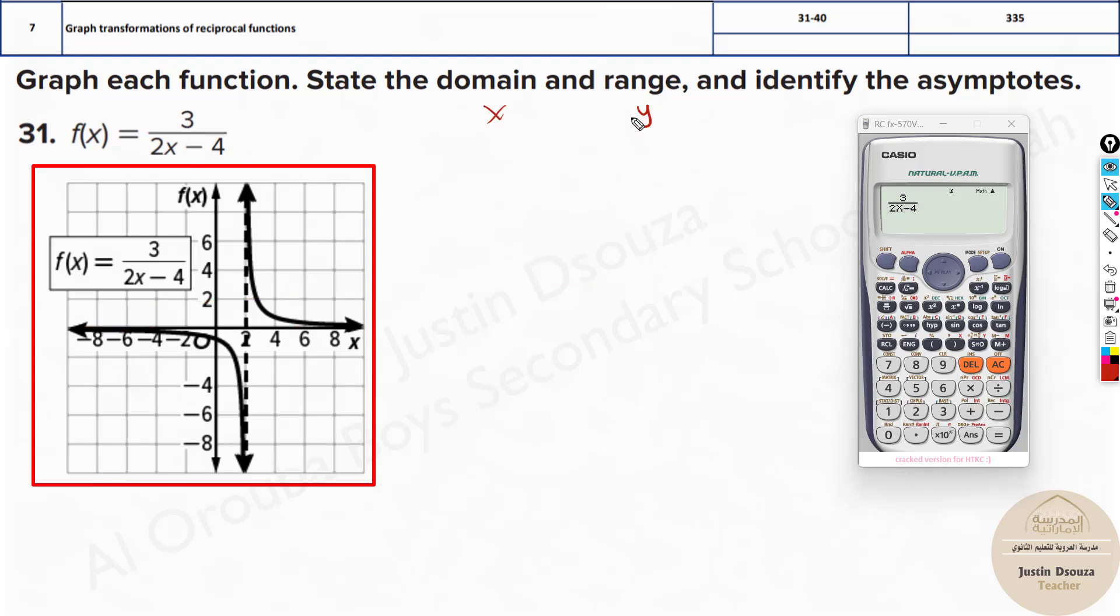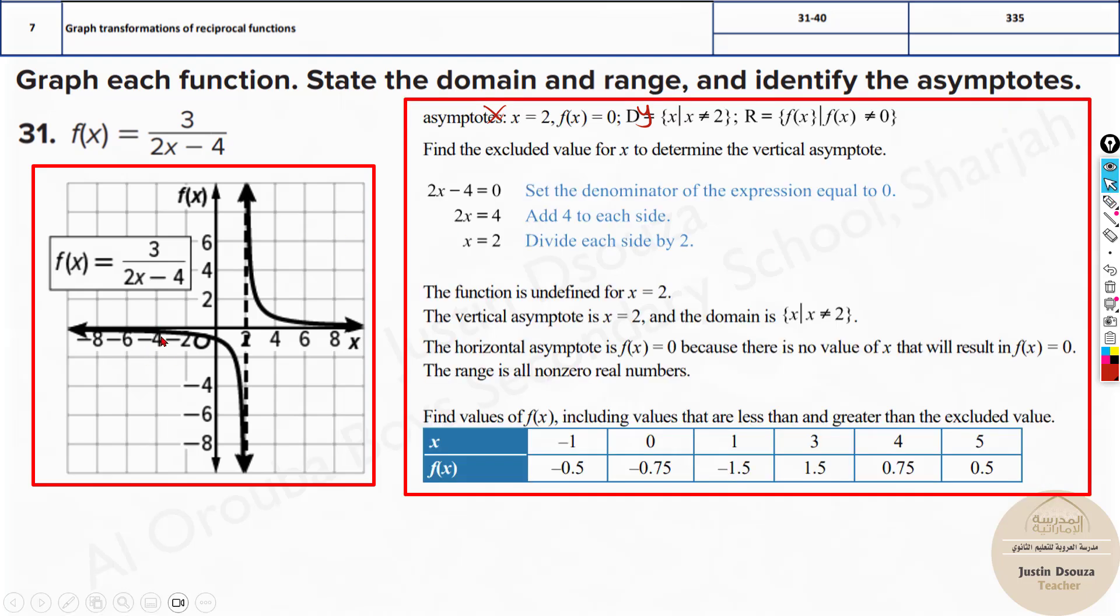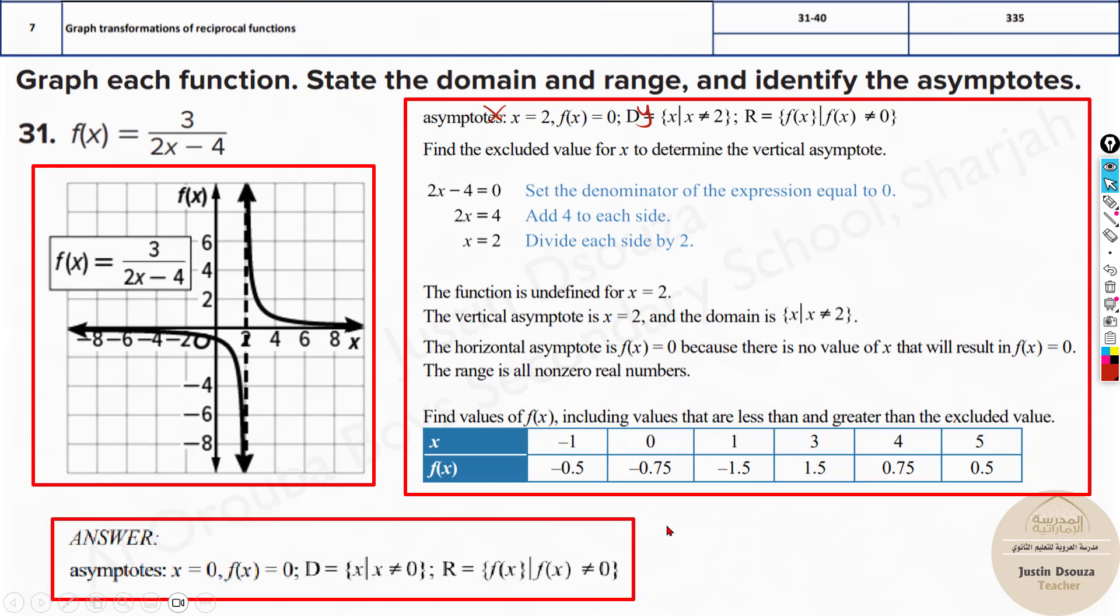What about the domain and range? Domain is all the x values, range is all the y values, all possible y values. Now here you can easily tell all possible real numbers are possible for the domain, but not 2. So you can see it's written like this: all x values except 2. Same with y, all y values except 0. So that would be the domain and the range. You can see range over here, all f of x. f of x means the function y, but not 0.